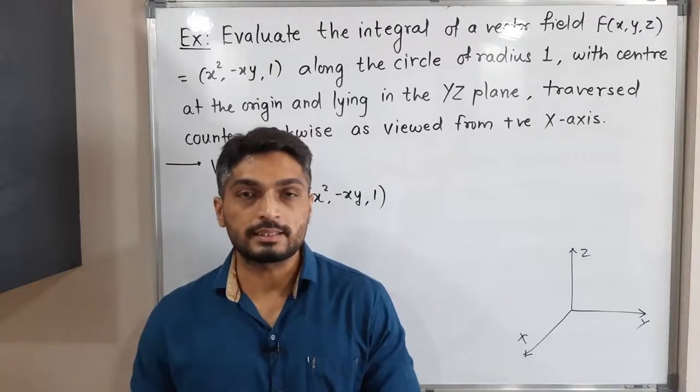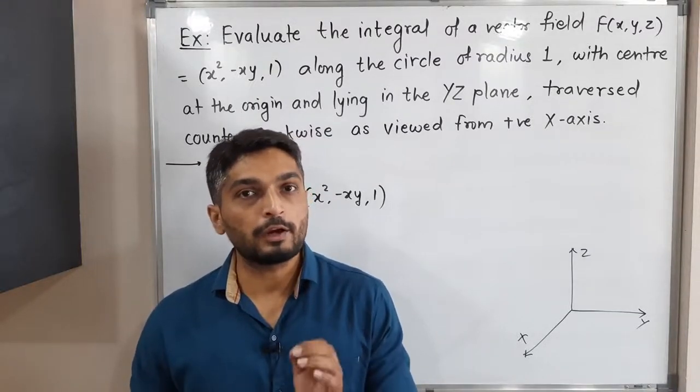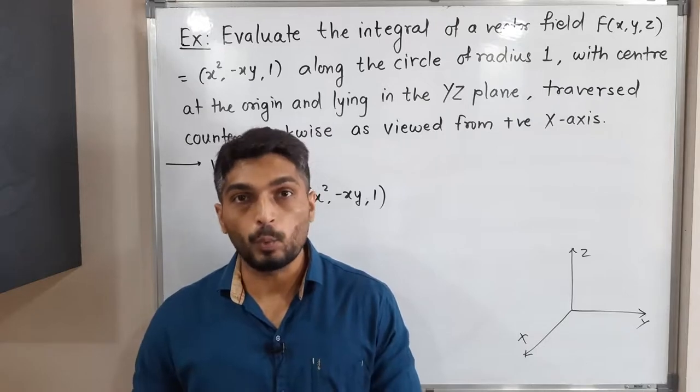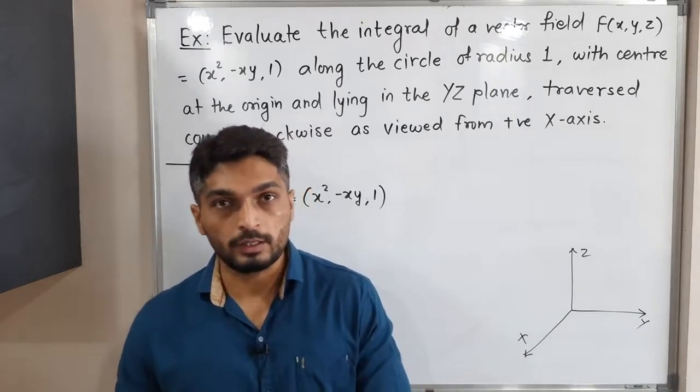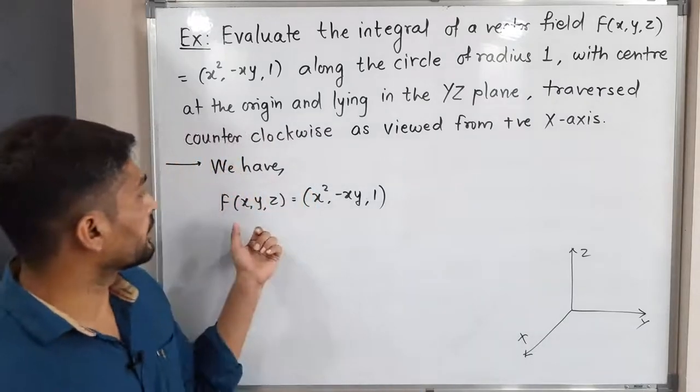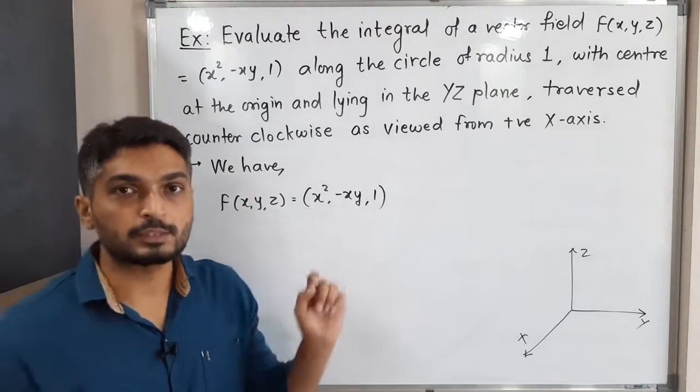Hi everyone, let us discuss this example. In this example, we have to find the value of a line integral over a vector field F. So the vector field I have already written here: F(x,y,z) is equal to (x² - x, y, 1).